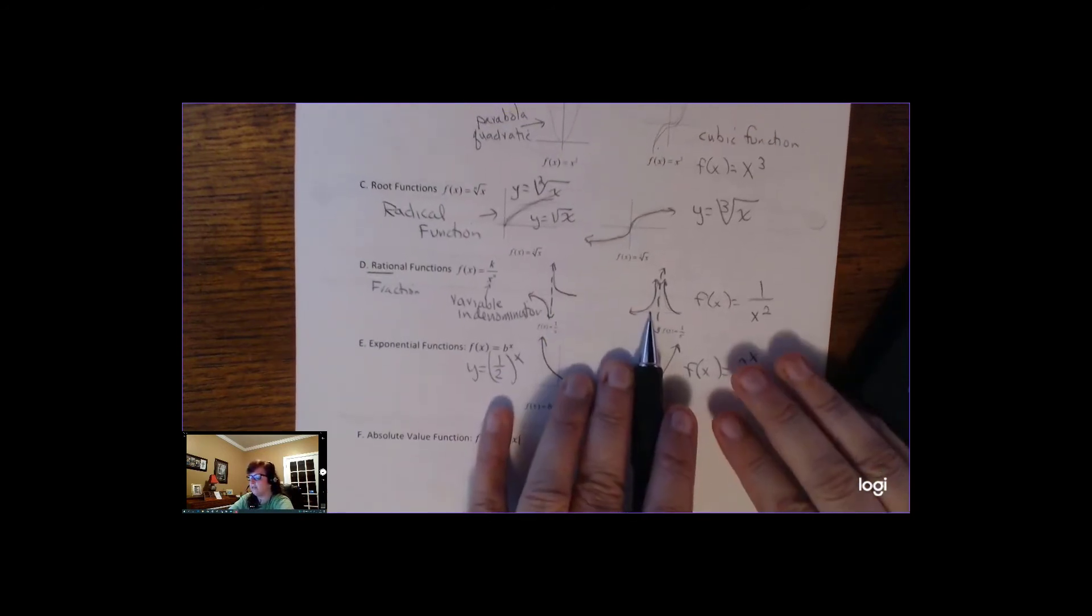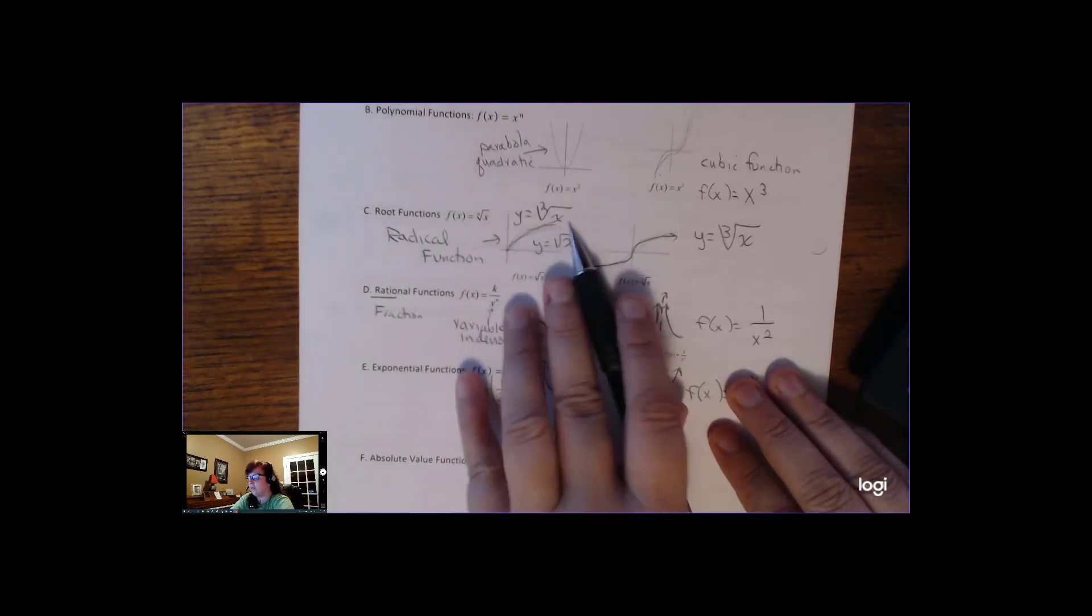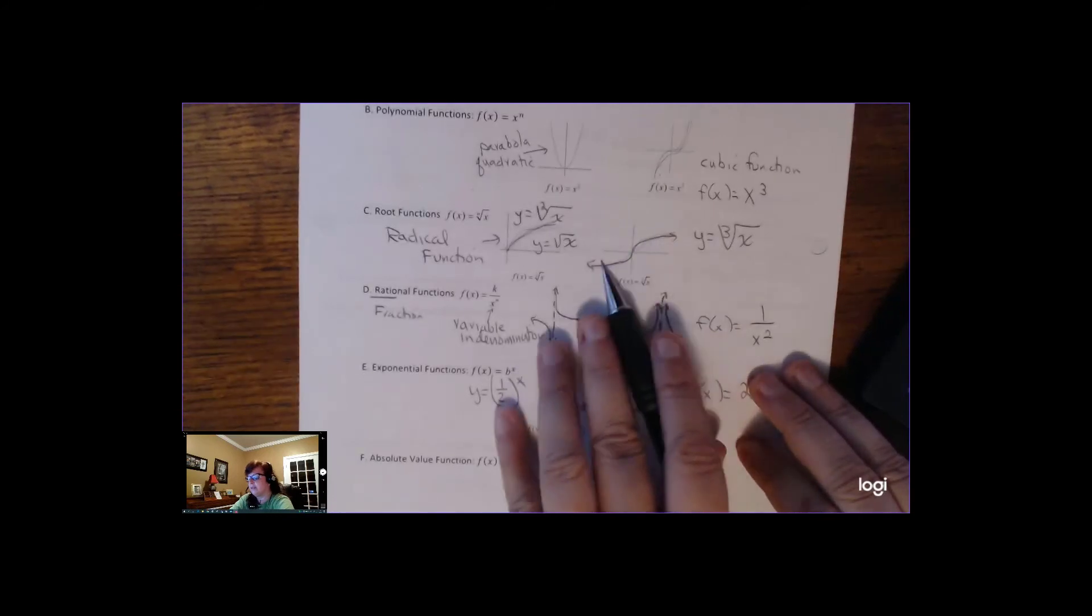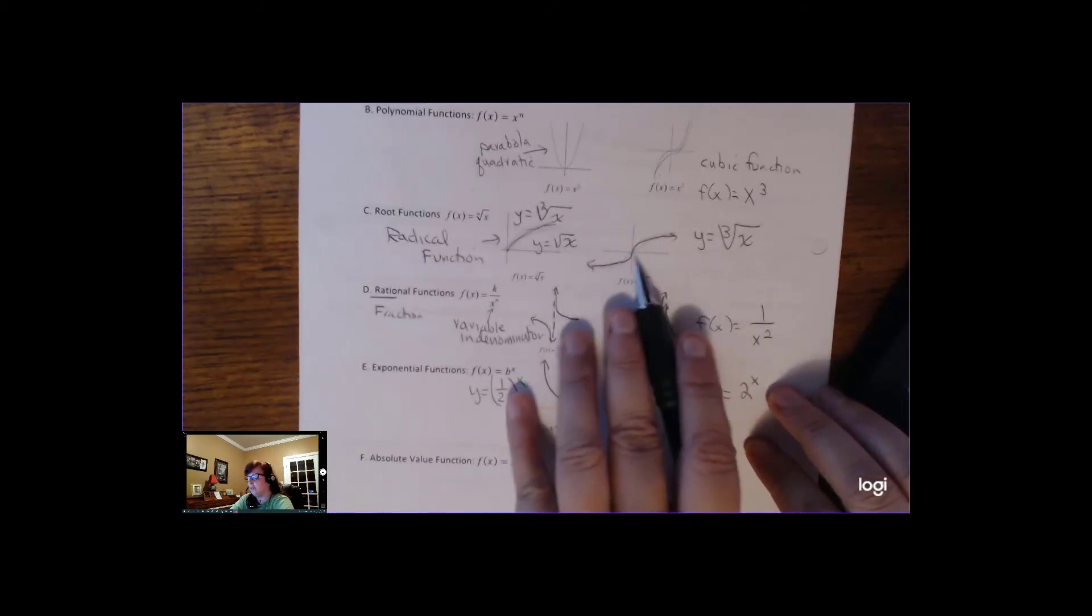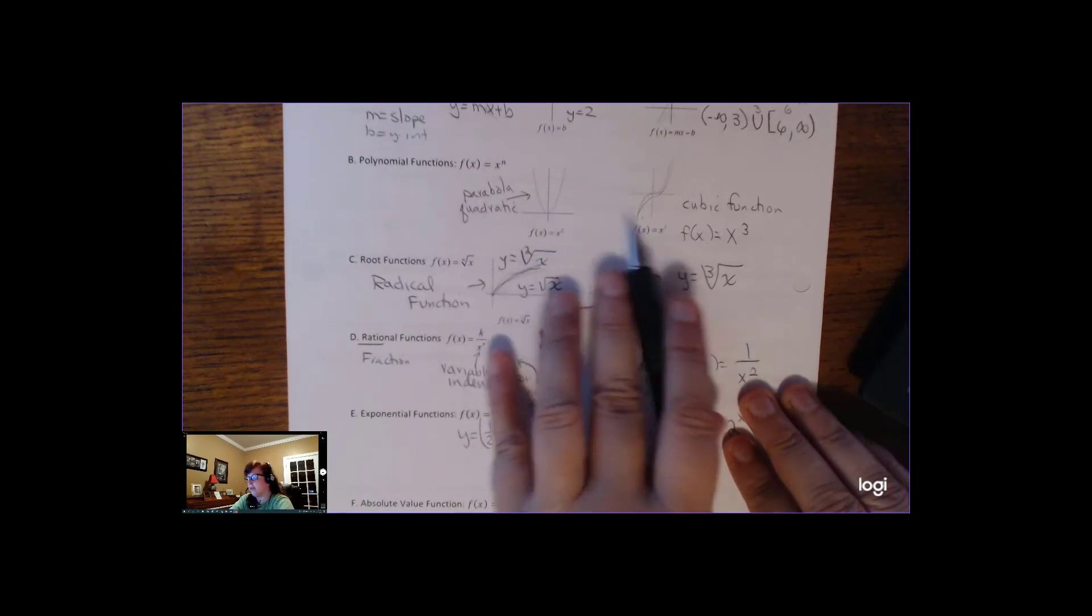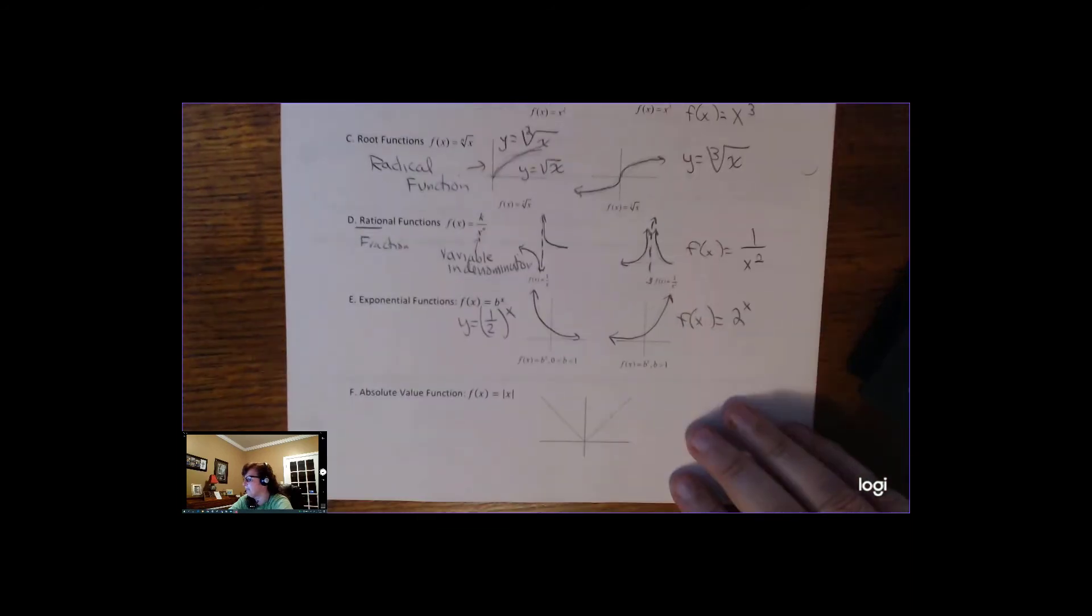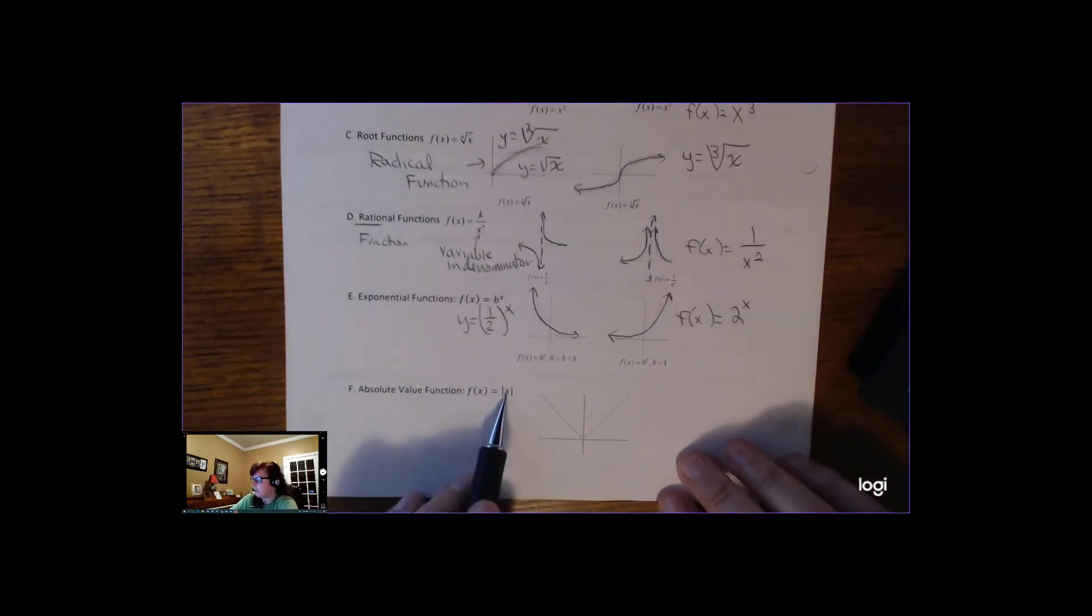Branches are rational functions. Sideways, half u's are square root functions. And this is a cube root function. This is a polynomial or quadratic function. That's a polynomial function or a cubic function. And then the last one we've talked about a lot. Absolute value functions. That's what absolute value looks like. And that's a v.